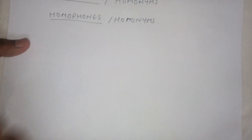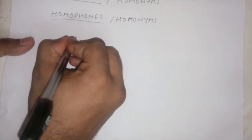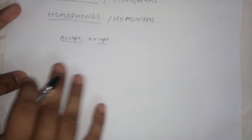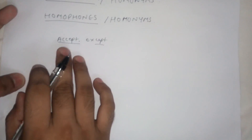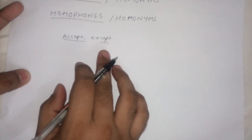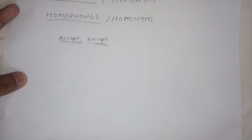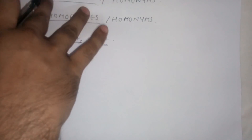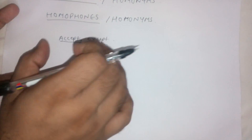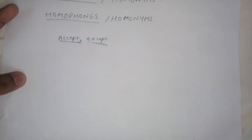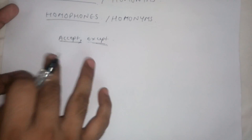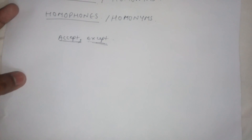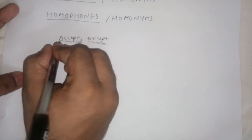Let me give you an example to understand homophones. Here we have 'accept' and 'except' — these two words sound similar; both are pronounced as 'except'. Homophones or homonyms are pairs of words — two or more words — whose pronunciation is exactly or almost the same, but their spellings are different in most cases, along with their meanings.